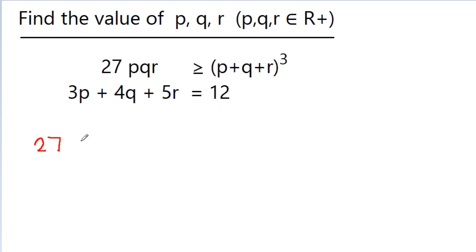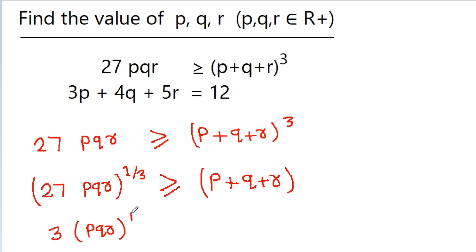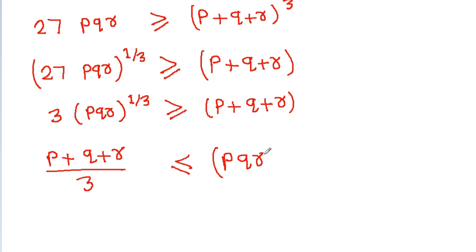Here we have 27 times pqr is greater than or equal to (p plus q plus r) to the whole cube. From here, we can get (27pqr) to the power 1/3 is greater than or equal to p plus q plus r. And now, since 27 is 3 cubed, we can write this as 3 times (pqr) to the power 1/3 is greater than or equal to p plus q plus r, which gives us (p plus q plus r) divided by 3 is less than or equal to (pqr) to the power 1/3. Let's call this equation 1.